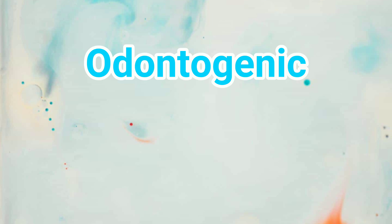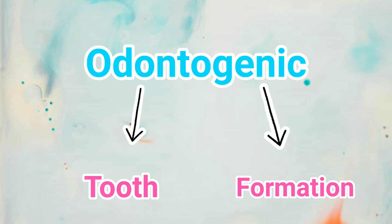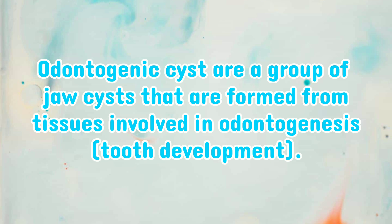Now let's look at the word odontogenic. Odonto means tooth. Genic means formation. So odontogenic is a group of cysts that form during the development of a tooth — odontogenesis.